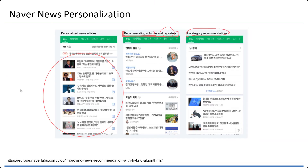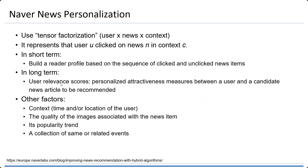So how can Naver do this? Based on some research, you can look at this article — they use tensor factorization. What we learned before was matrix factorization, which has two attributes: user and item. For tensor, it will be more than two. You look at user versus news and context. We will learn later about the context-aware recommender system.